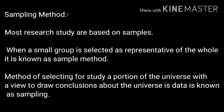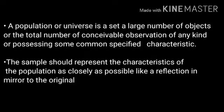Most research studies are based on samples. When a small group is selected as representative of the whole, it is known as the sampling method. The method of selecting a portion of the universe for study, with a view to draw conclusions about the universe, is known as sampling. A population or universe is a set of a large number of objects possessing some common specified characteristics. The sample should represent the characteristics of the population as closely as possible, like a reflection in a mirror.